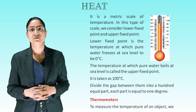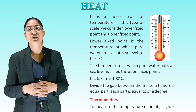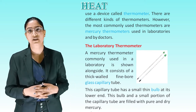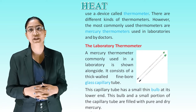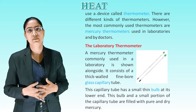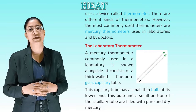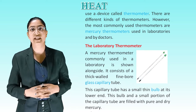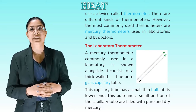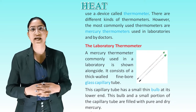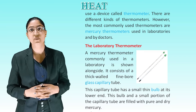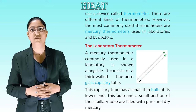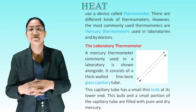Thermometers. To measure the temperature of an object, we use a device called a thermometer. There are different kinds of thermometers. However, the most commonly used thermometers are mercury thermometers, used in laboratories and by doctors. A mercury thermometer used in a laboratory consists of a thick-walled, fine-bore glass capillary tube. This tube has a small thin bulb at its lower end, and this bulb and a small portion of the capillary tube are filled with pure and dry mercury.